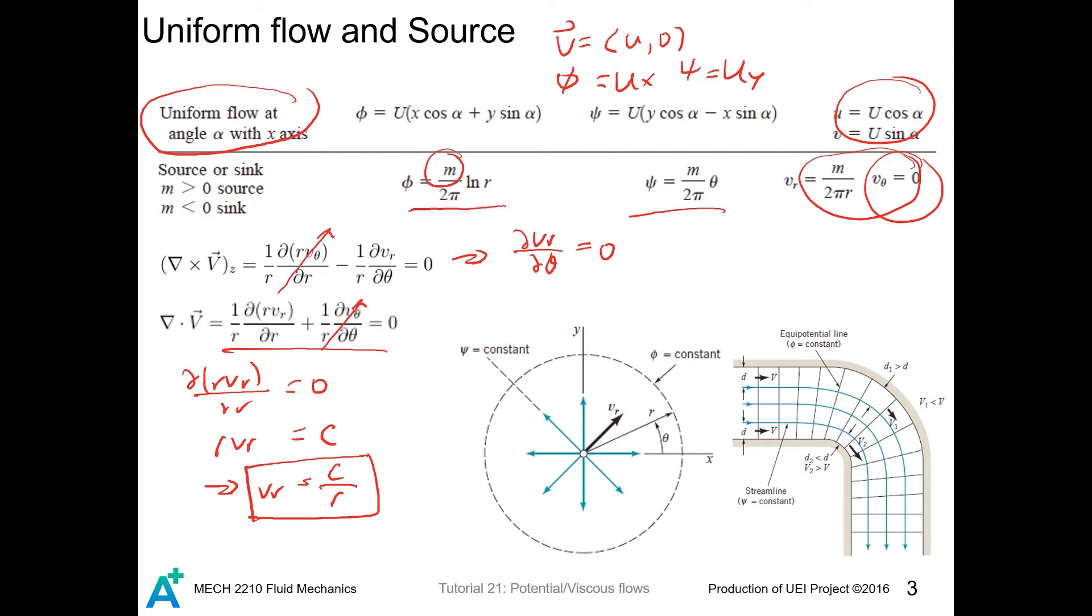The m here in the numerator is the flux across the curve, or the mass flow rate per unit length perpendicular to the xy plane. I will explain that later in this video.